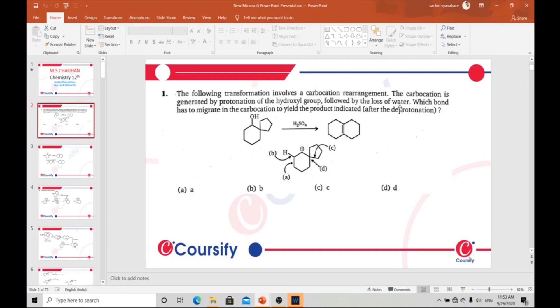That bond we have to find out. Here are the options A, B, C, D. First of all, OH is here, and as in the statement, the carbocation is made by protonation of the hydroxyl group.